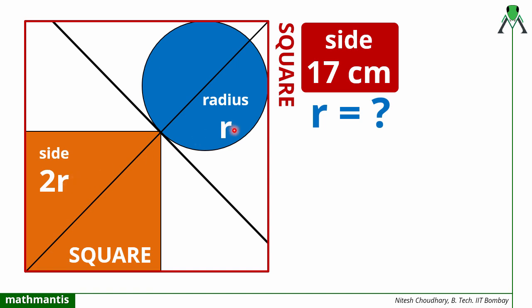r is defined as the radius of this circle. The circle is touching the adjacent sides of the square. We have also defined a point where the orange square is touching the circle, and at that point we have defined a line inside the square. Using this information, we have to find the radius of this circle.